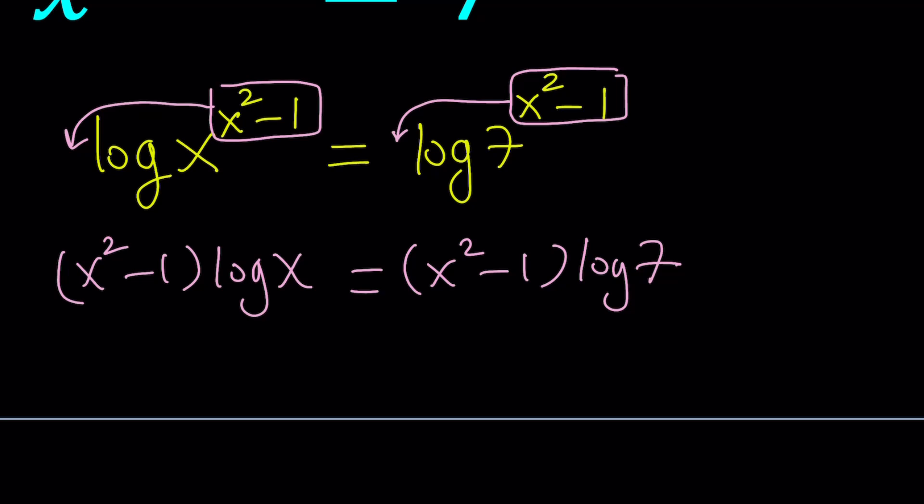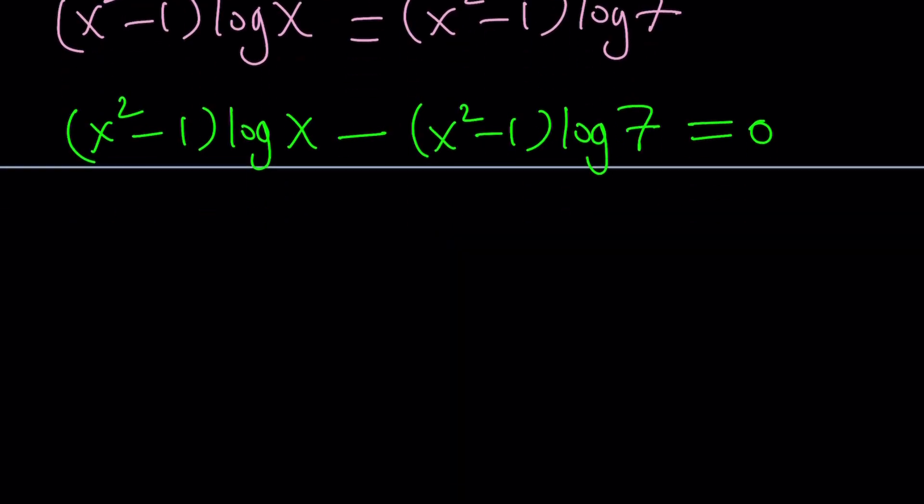When we find the solutions, you'll have a better idea. Now, we don't want to do it. Rather, we want to bring everything on one side and then set the whole thing equal to 0. Let's go ahead and do it. We have x squared minus 1 times log x minus x squared minus 1 times log 7 equals 0. That's good.